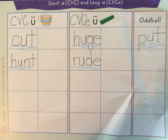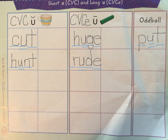Now you need to stop the recording, take your word cards, and put them either under short U, long U, or perhaps they're an oddball word and you need to put them under the oddball category. Read your words aloud as you're sorting them. Once you're done sorting all of your words, go ahead and start the recording again.